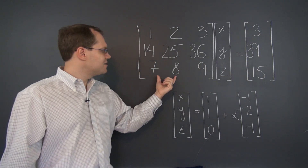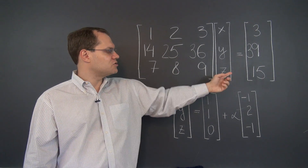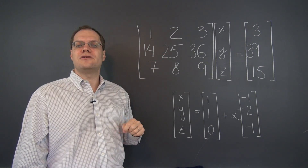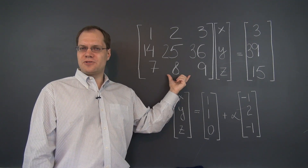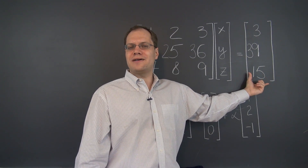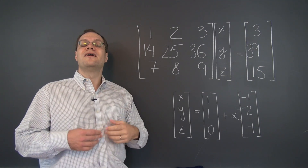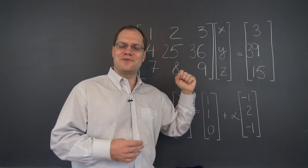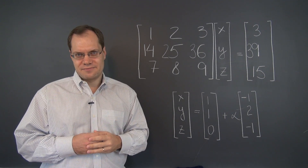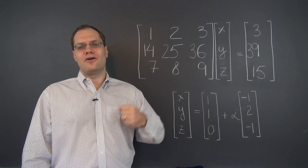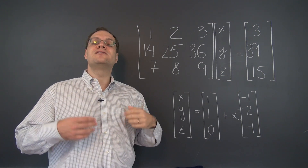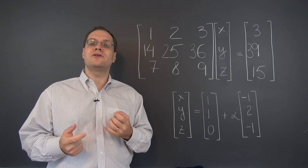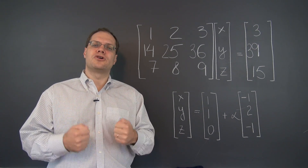Let's see if the right-hand side is still the sum of the first two columns. In the first entry and the last entry, of course, it's still true because those are unchanged. And 39 is indeed 14 plus 25. So this row operation not only preserved the relationships among the columns, but also preserved the linear relationship of the vector on the right-hand side to the columns of the matrix. In summary, adding a multiple of one row to another preserves the relationships among the columns and the relationship of the right-hand side to the columns — in other words, it preserves the solution set, because the solution depends only on those relationships. In particular, it will preserve the null space.